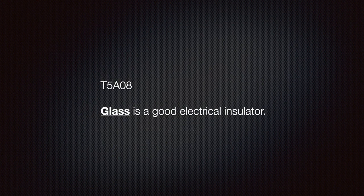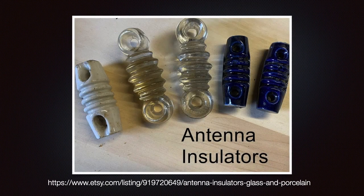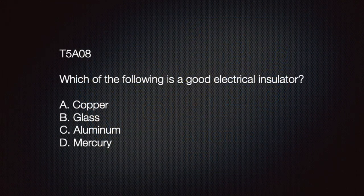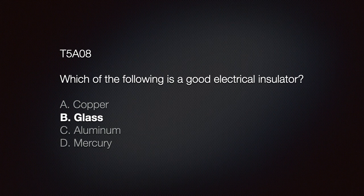We should also understand that glass is a good insulator. Here we can see insulators used for amateur radio antennas. Materials with low electron mobility are called insulators. In other words, they have few or no free electrons and do not conduct electricity. This question might be on your exam. Which of the following is a good electrical insulator? A, copper. B, glass. C, aluminum. Or D, mercury. The correct answer is B, glass.